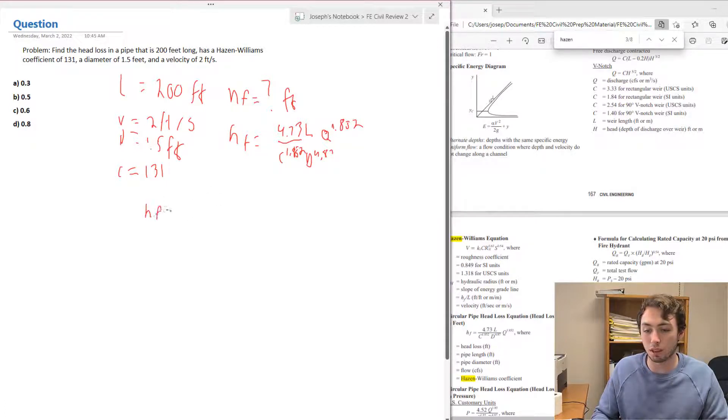We have most of the things already given, however we're going to have to find Q and we're going to do that by using the diameter that we were already given and the velocity using another equation. We got 4.73...